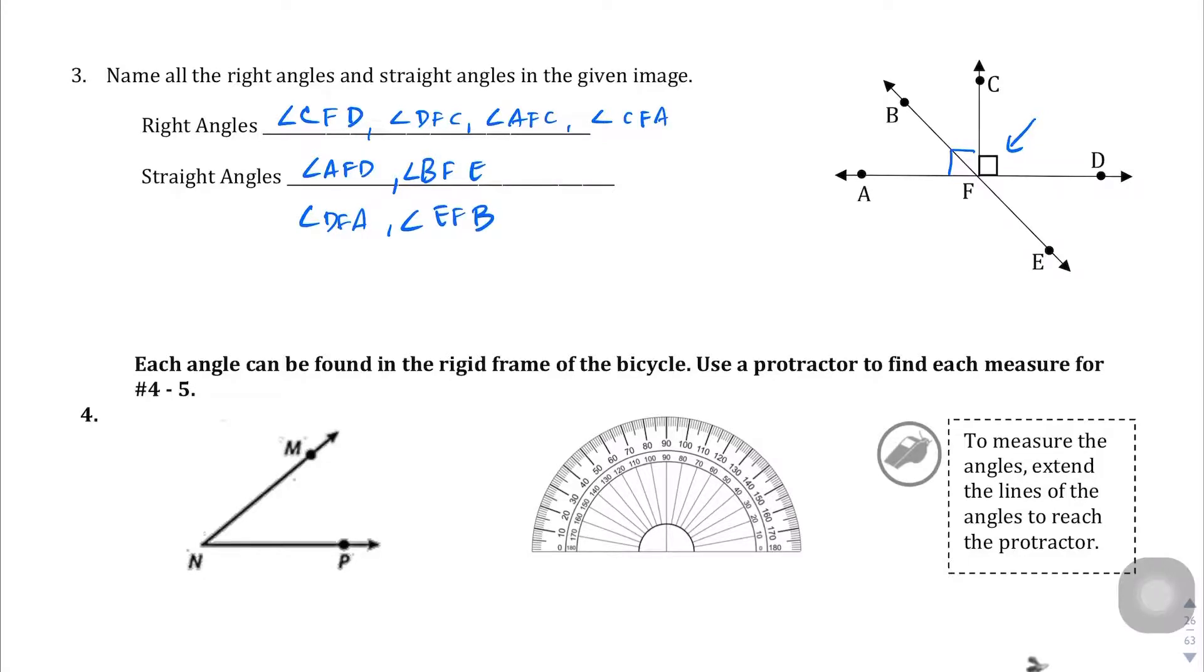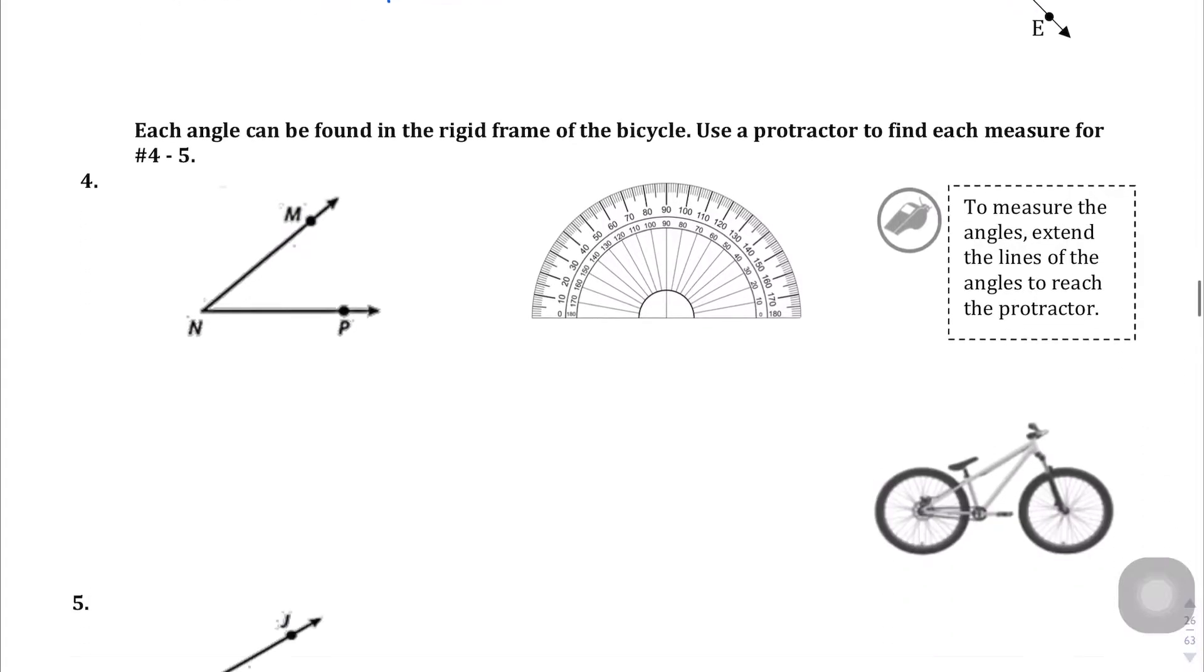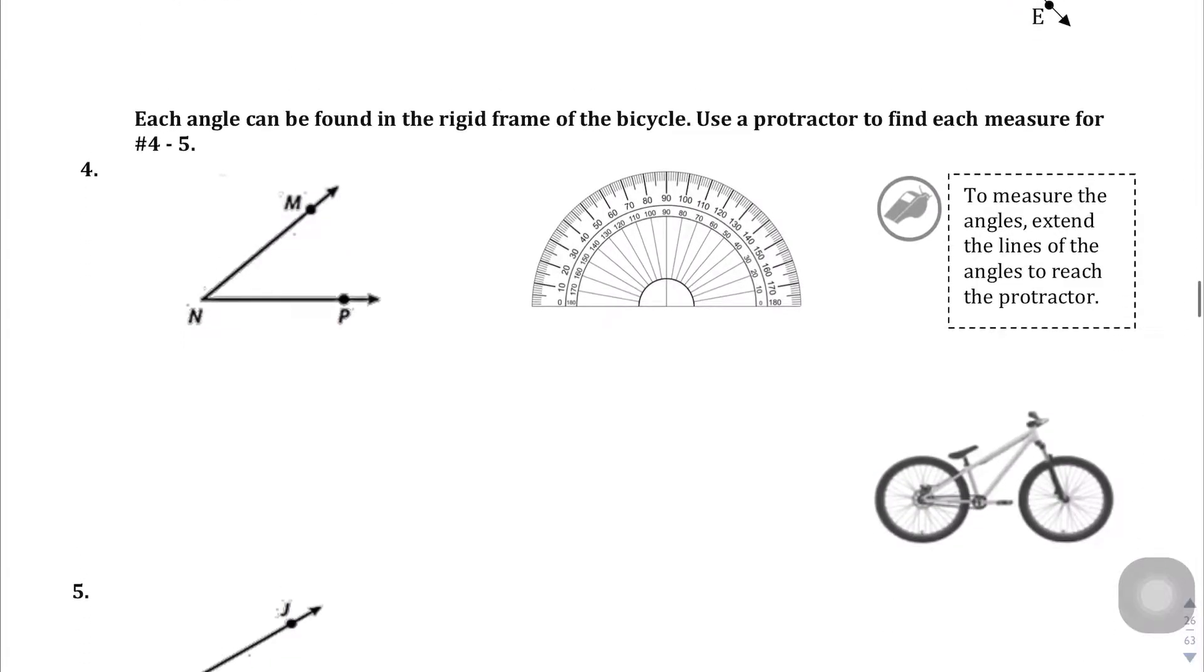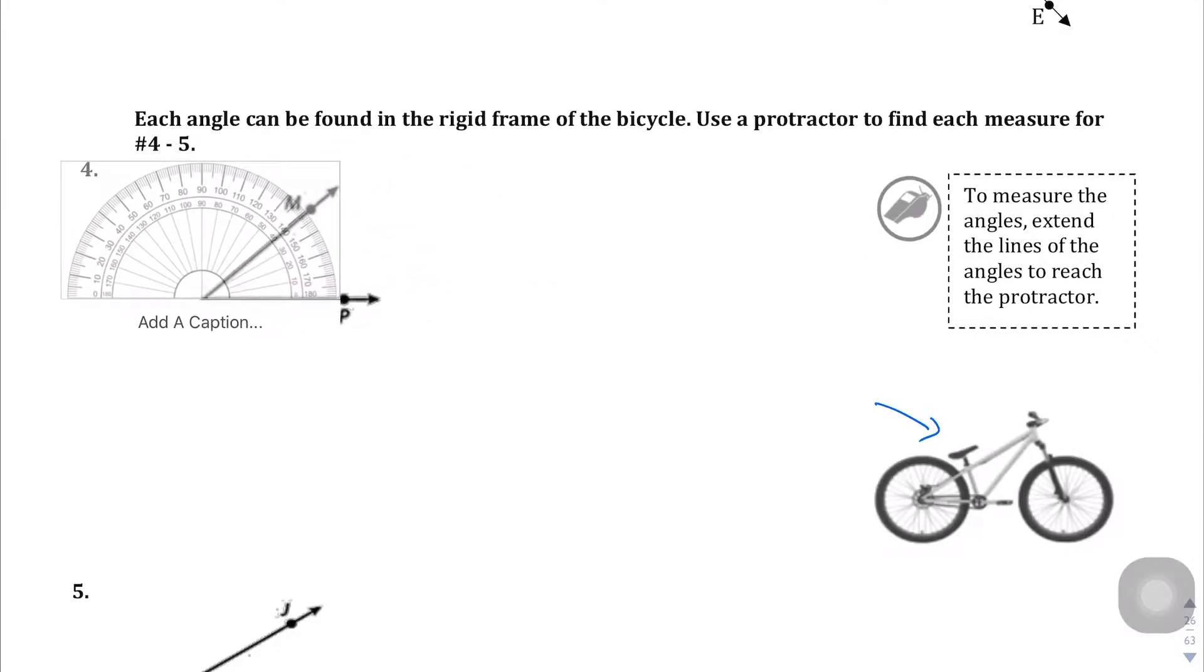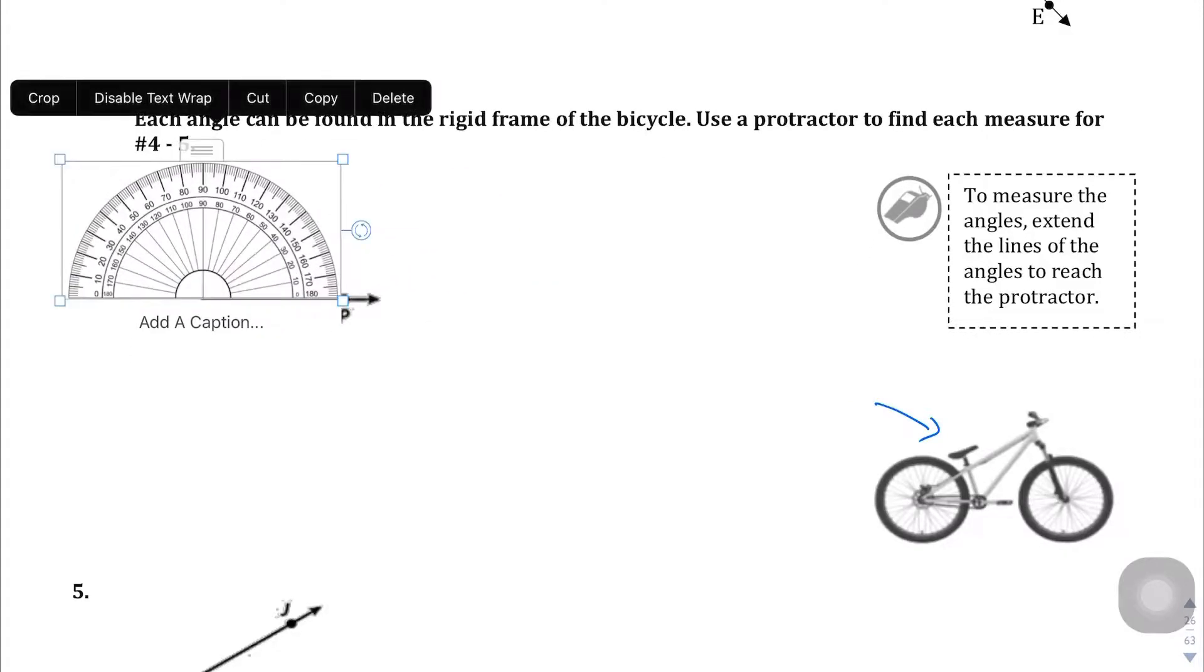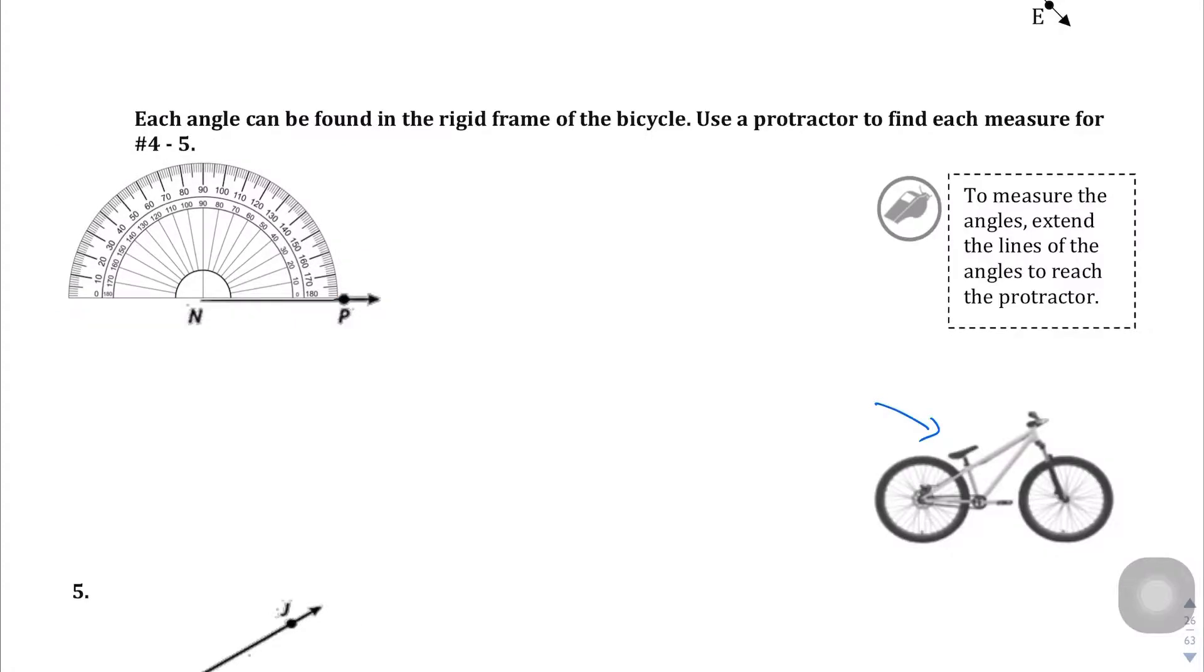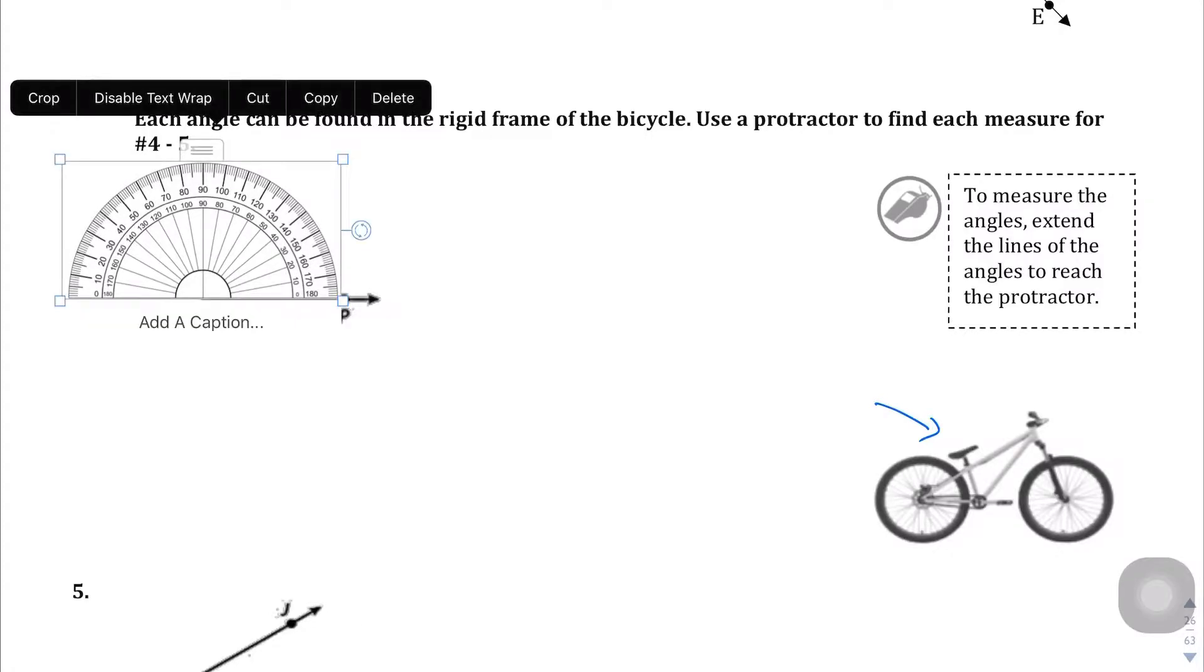Question number four. Each angle can be found in the rigid frame of this bicycle. Use a protractor to find each measure for numbers four and five. So here's a simple drawing of a protractor that I picked. I'm gonna put the protractor right here where the vertex is, right in the center there.